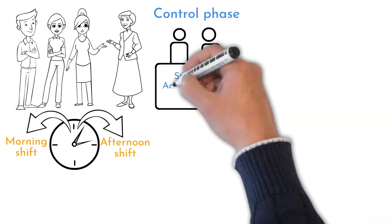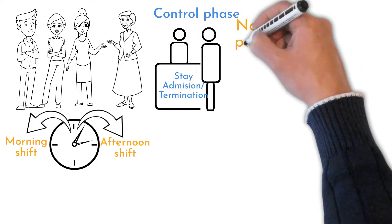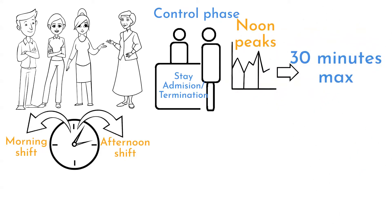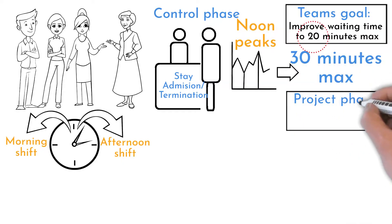Waiting time to enter the hospital is 15 minutes in average now. Noon peaks were reduced from 2 hours to 30 minutes. Goal 20 minutes waiting max was not reached yet, but improvement is tremendous. There will be second project phase launched after stabilizing current changes.